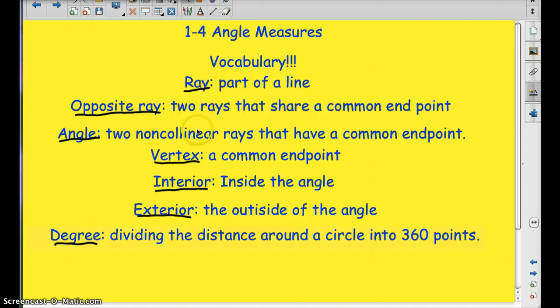A ray is a part of a line. Opposite rays are two rays that share a common endpoint. Angle is two non-collinear rays that have a common endpoint. The vertex is a common endpoint. Interior is inside the angle. Exterior is outside the angle. And the degree is dividing the distance around the circle into 360 points.